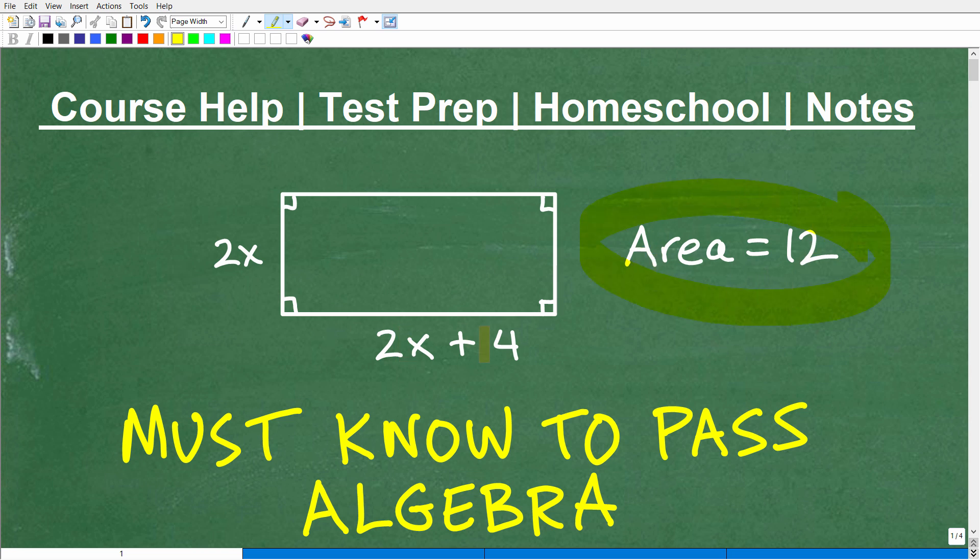And we're told that the area is 12 units squared. So we don't have inches or centimeters, this is 12. And the problem here is that we want to actually find the length and the width. So instead of 2x and 2x plus 4, we want to find the actual measurements of the dimensions of this rectangle.